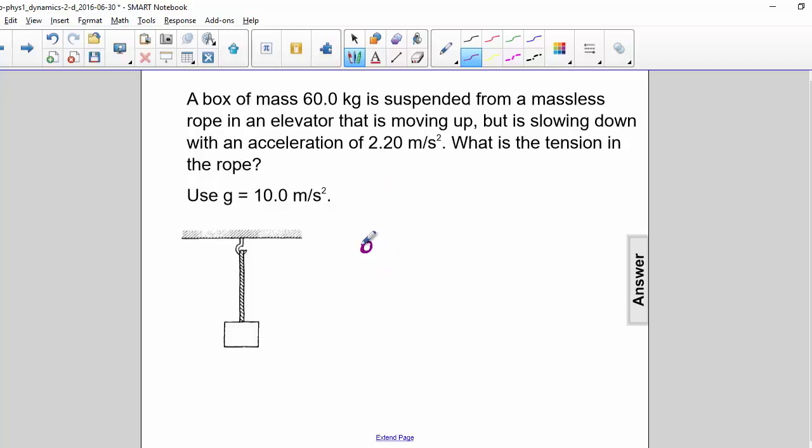So first we'll draw a free body diagram. We know that mg is down, and we also know that the acceleration is down, since it's moving upwards but slowing down, which makes the force of tension smaller than mg.